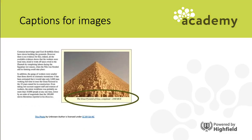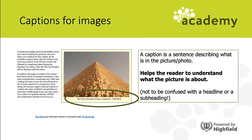For captions for images, it's important to note that the image itself is not an organizational feature - only the caption is. The caption is the sentence or phrase below the picture or photograph that tells the reader what the picture is about, providing a little extra information. For example, 'The Great Pyramid of Giza, completed 2560 BCE.' Don't mix up captions with headlines or subheadings - they are very different things.